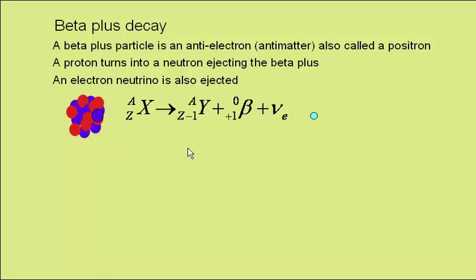In terms of the general equation, we have parent X, with atomic number Z and mass number A, becoming daughter Y. In this case, one of the protons, which appears in the atomic number, has become a neutron, which doesn't show. So the atomic number drops by one.